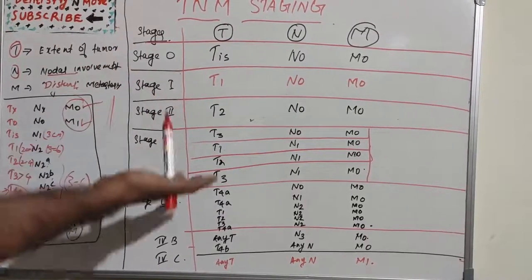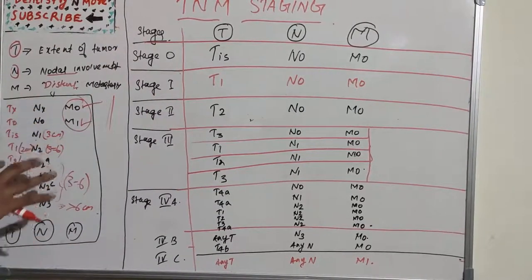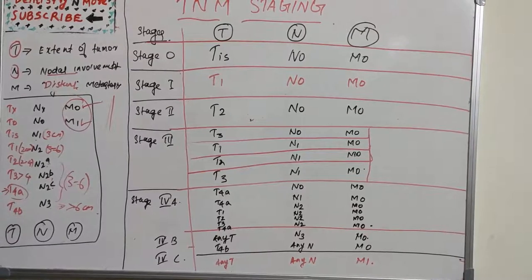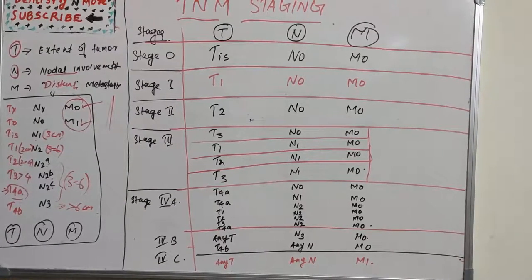Staging is simple but understanding it is a bit tricky. In situ is a different concept from stages 1, 2, 3, and 4. In situ means carcinoma is localized to that position. T1 is 2 centimeters, T2 is 2 to 4, T3 is more than 4, and T4A and T4B extend or invade local structures.